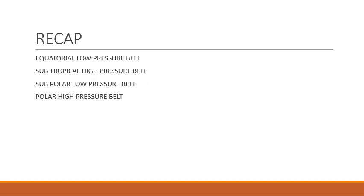So children, just a brief recap of what we had studied. In the previous class, we had studied about the world pressure belts. There are four main pressure belts: the equatorial low pressure belt, which lies between 0 to 5 degree north and south of the equator. We studied about the cause for this pressure belt — because of the vertical rays of the sun, because of the high humidity, because of the rotation of the earth.